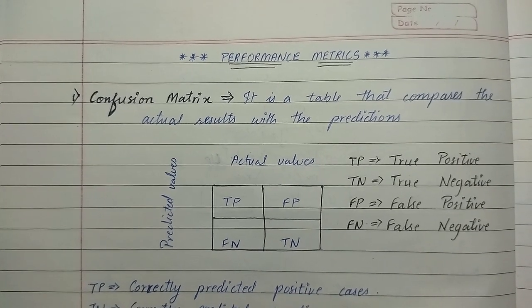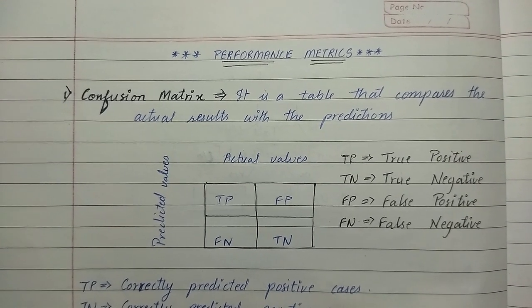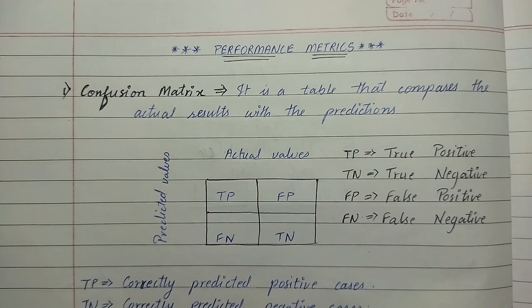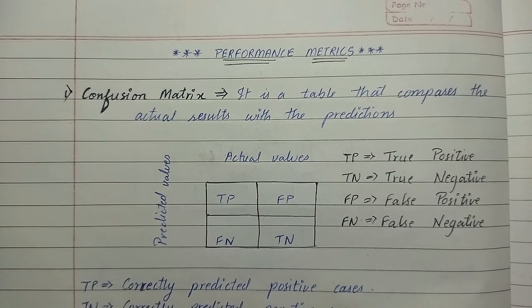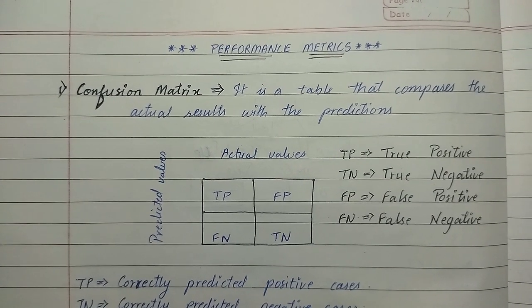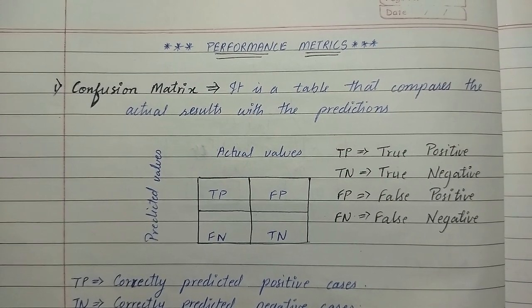Hello guys, welcome back to the channel. Today we are going to see about performance matrices. There are various performance matrices and the first one is confusion matrix. It is a table that compares the actual results with the predictions.